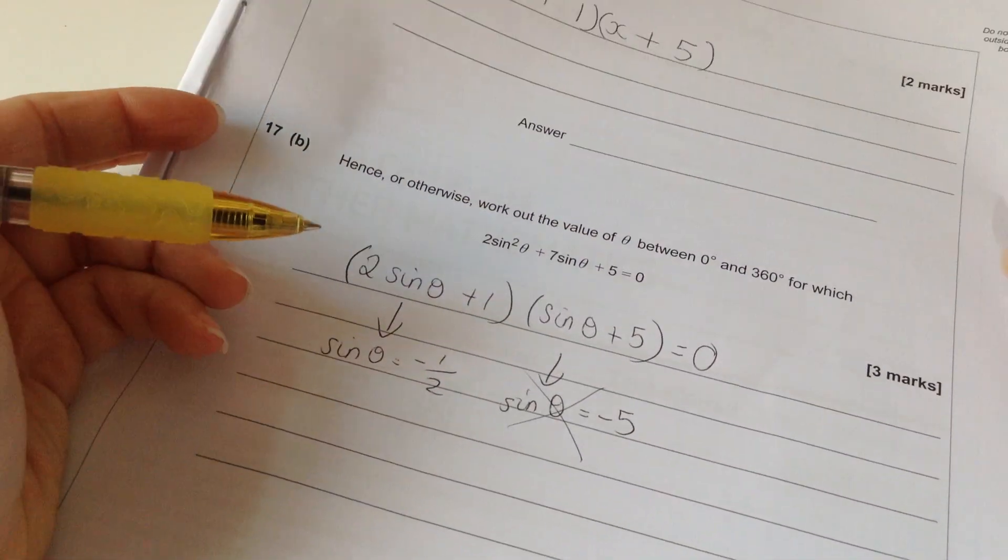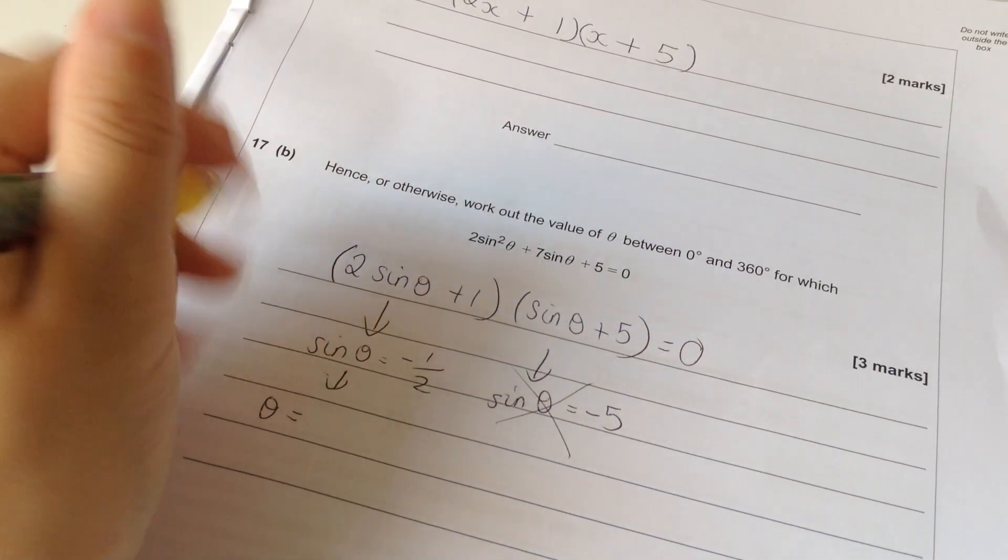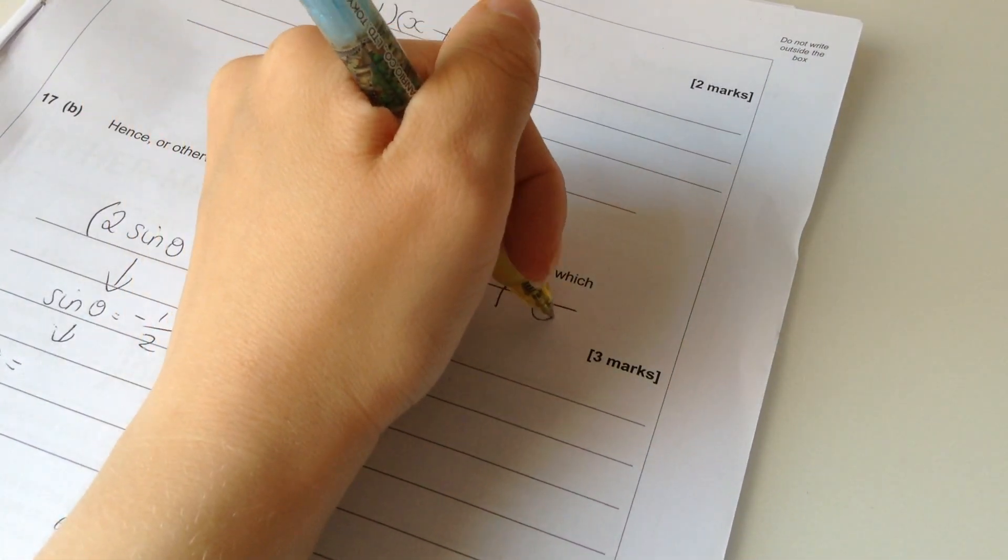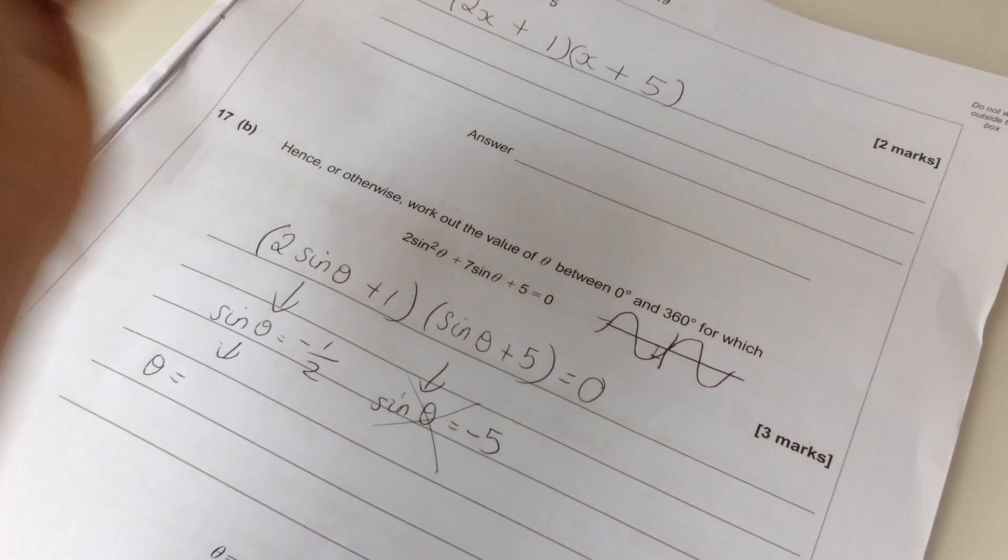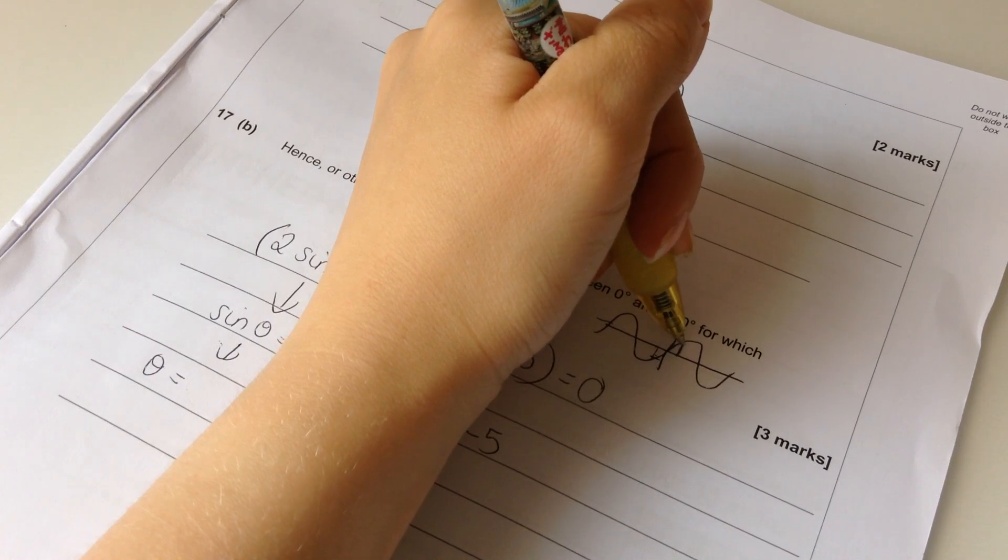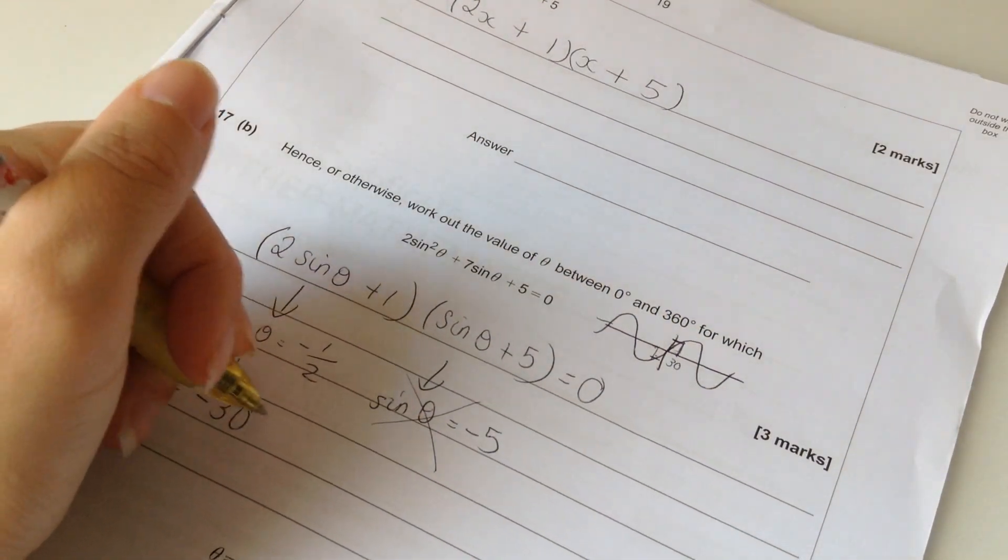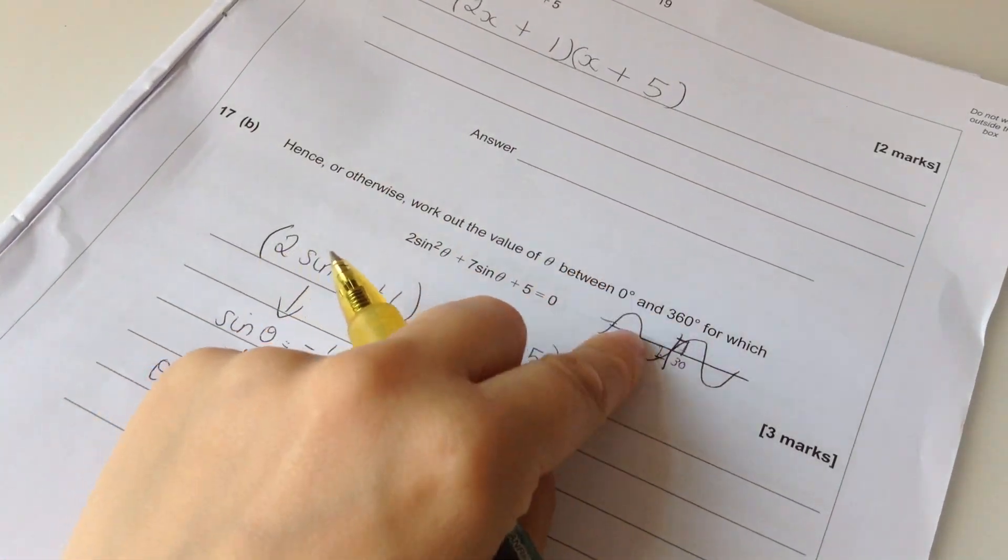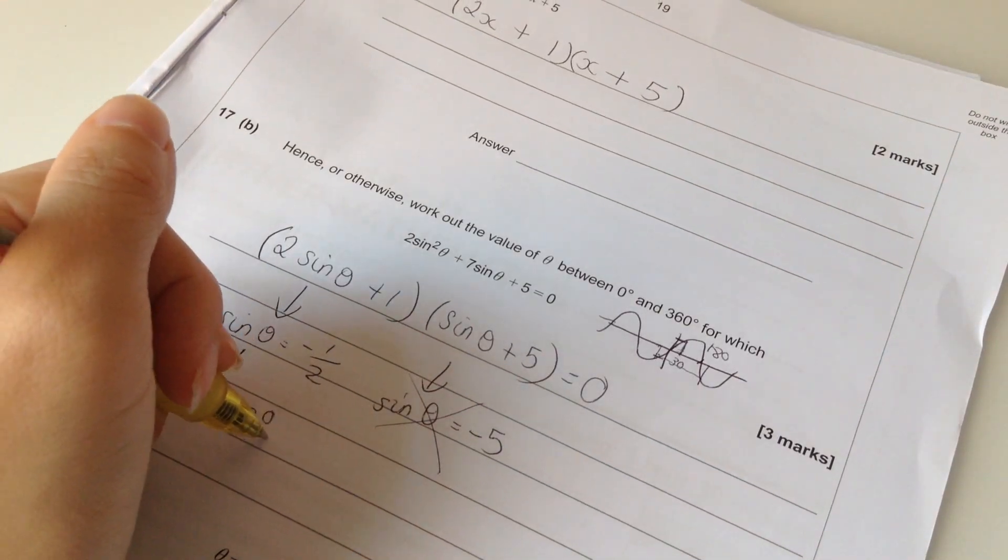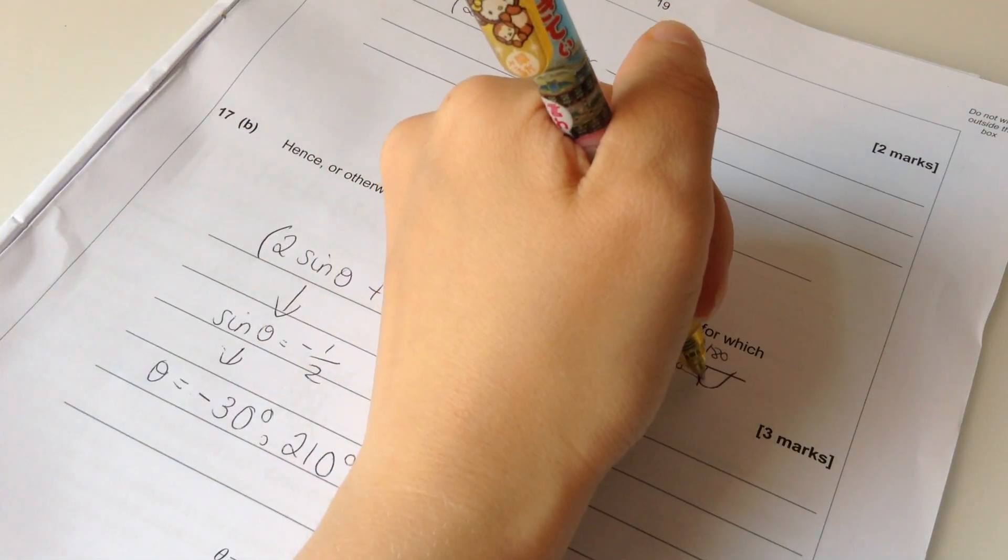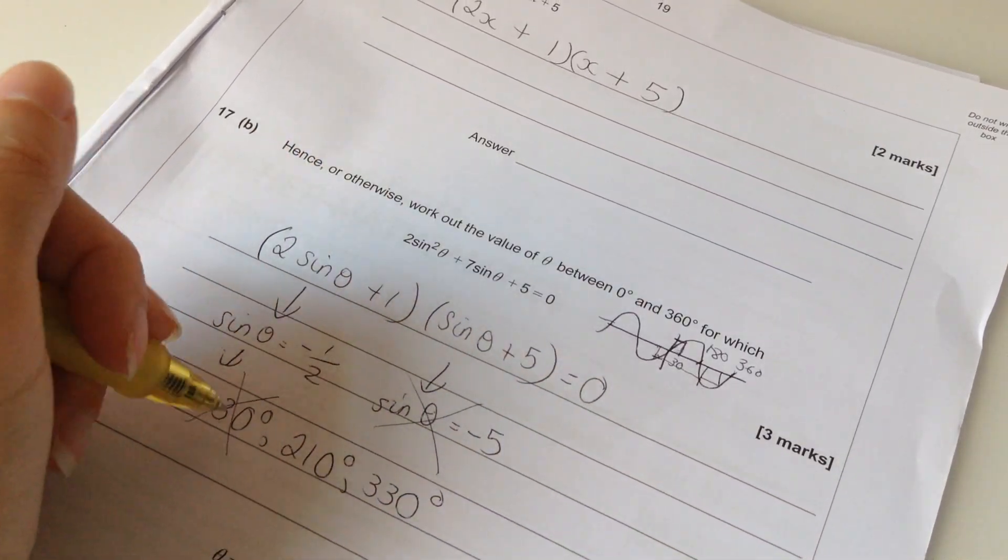So, sine theta equals negative 1 half or sine theta equals negative 5. Well, clearly that's not going to work because sine only goes between 1 and minus 1, so there's no solutions there. But here, we don't have a calculator. Oh dear. Another sine graph here. We have to go negative. Inverse sine of negative 1 half. Okay. Well, that's going to be kind of similar to the inverse sine of 1 half, which I know is 30. So, minus 30 makes sense, right? So that's minus 30. But we're not allowed minus 30. It has to be between 0 and 360. So, if I scoot along a bit, that's 180. So that'll be 210. And then if I go across here, that's going to be 330, because it's 360 minus 30. So, actually, you don't include that one. These are your answers.